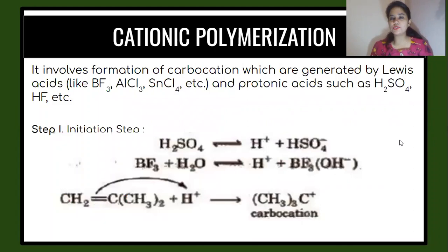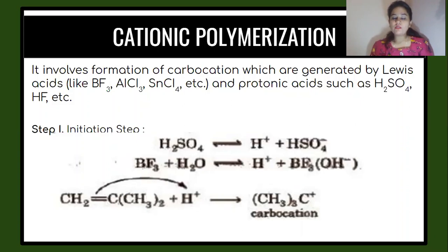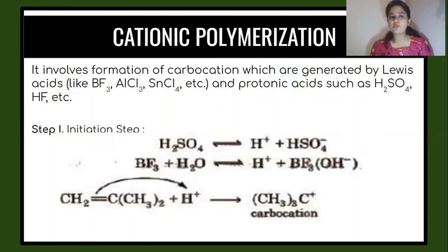Now, talking about Cationic Polymerization — as we discussed in the very first initial slide — a cation is anything which will have a positive charge to it. Whenever it has a positive charge, it can also be called a Carbocationic Intermediate Formation Polymerization Reaction. Generally in Cationic Polymerization, what happens is we lead to the formation of a Carbocation. A Carbocation is anything which has a positive charge. We form it by the presence of Lewis acids such as BF3, AlCl3, AcnCl4, etc., or we can make use of Protonic Acids like H2SO4 and HF.